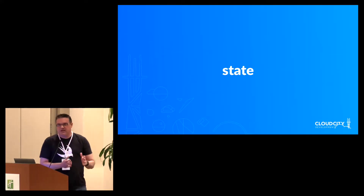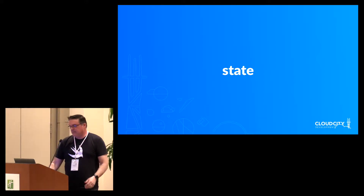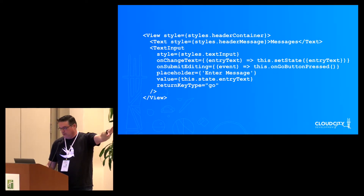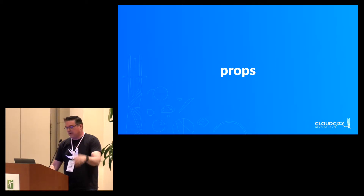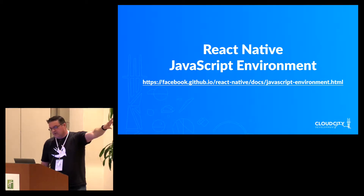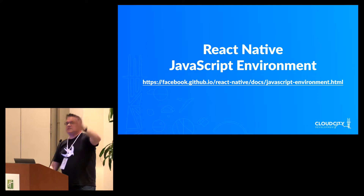React Native has an obsession with state — you can manipulate the state within a component. And then there are things called props, which are the properties you see declared on components, that you don't change once you're inside the component. If you want to learn more about the JavaScript environment and what parts of JavaScript are valid in React Native — including ES6 and ES7 — check out their documentation.